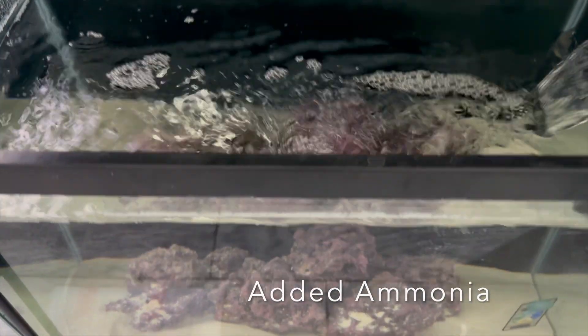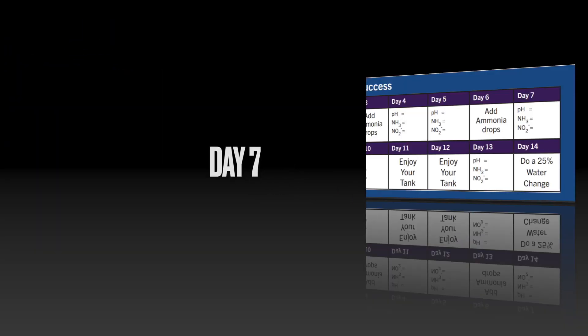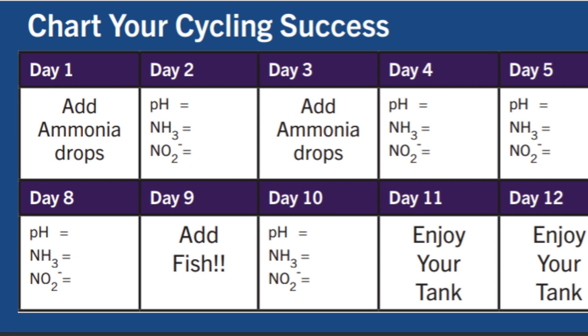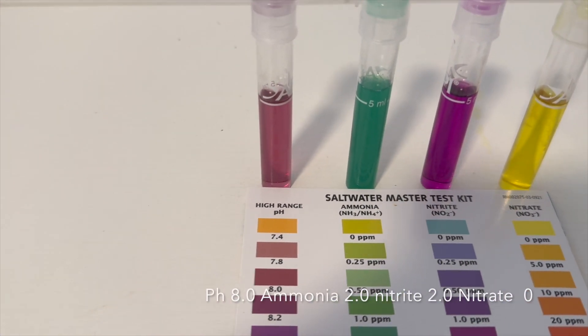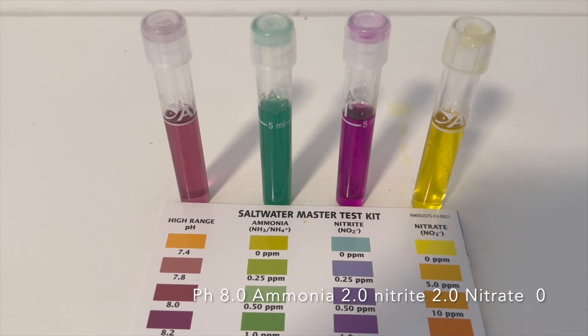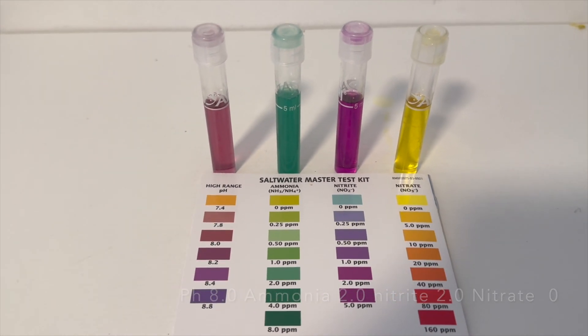Day 6: adding ammonia. Day 7: I topped off the evaporation water with RODI water and fixed the water level. Time to check the parameters. Day 7 results: pH at 8.0, ammonia at 2.0 parts per million, nitrite at 2.0, and nitrate at zero. Let's see what tomorrow brings.